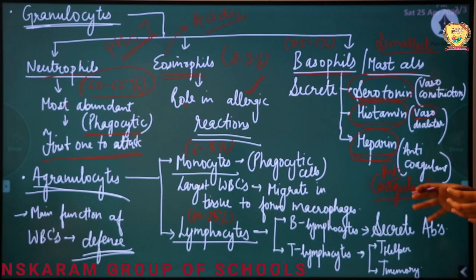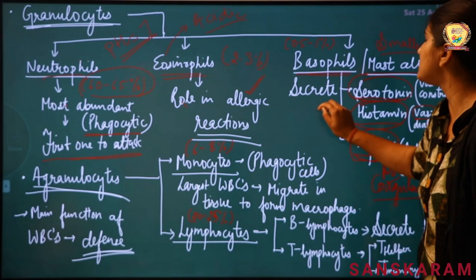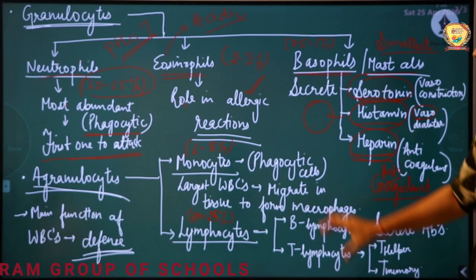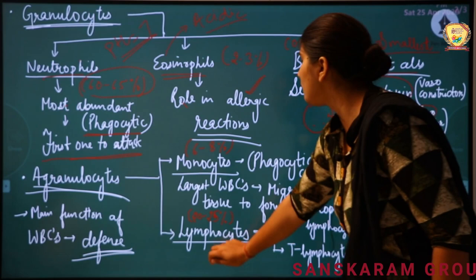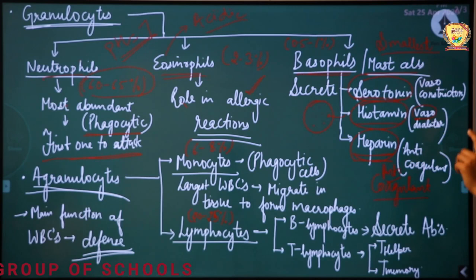Now talking about agranulocytes — these are WBCs whose cytoplasm has no granules. In granulocytes, protein granules are present in the cytoplasm. Agranulocytes have two main categories: monocytes and lymphocytes. Their concentrations: 60–65% neutrophils, 2–3% eosinophils, 0.5–1% basophils.